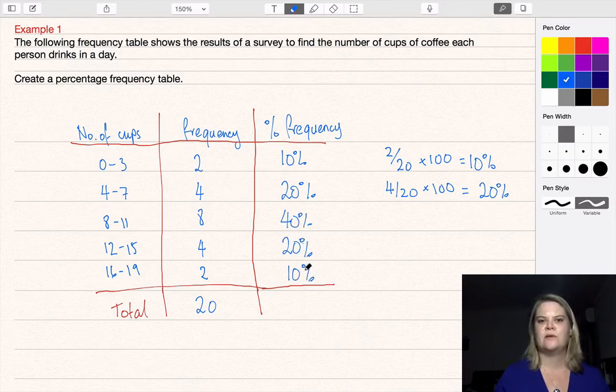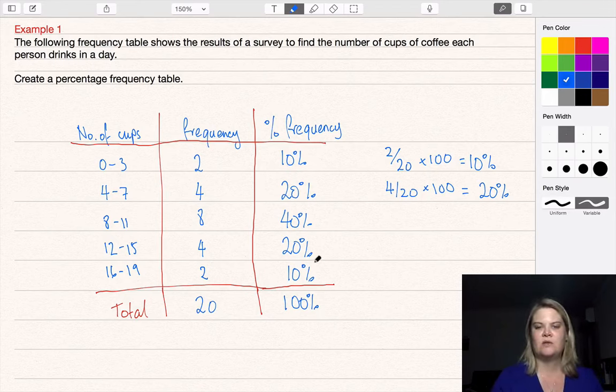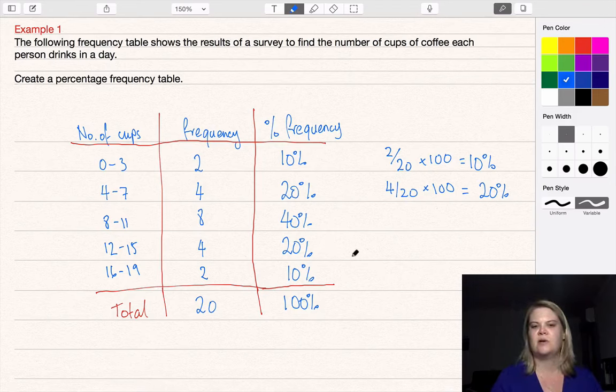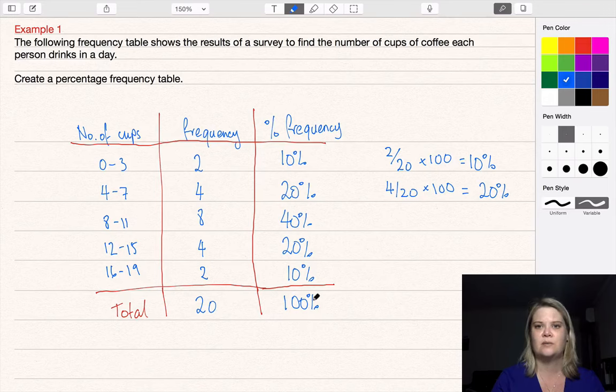When you have all the rows filled in and add up all the percentage frequencies, they should add up to 100%. It may be slightly less than 100% if you've had to round your numbers a little bit. It might be 99.8 or 99.9, and that's okay. That's just due to a rounding error. But if you have whole numbers like mine, it will sum to 100%.